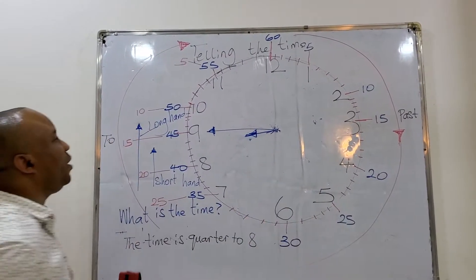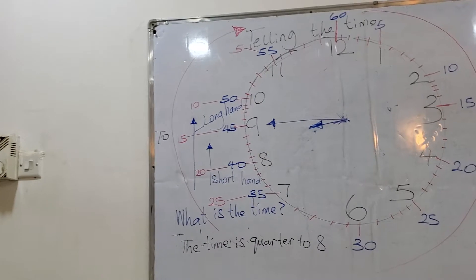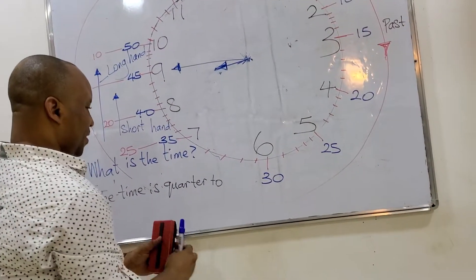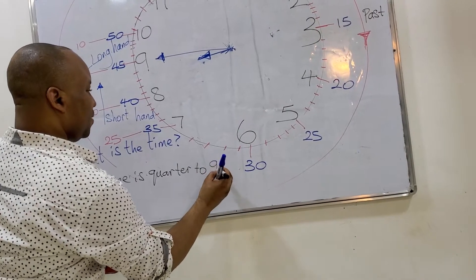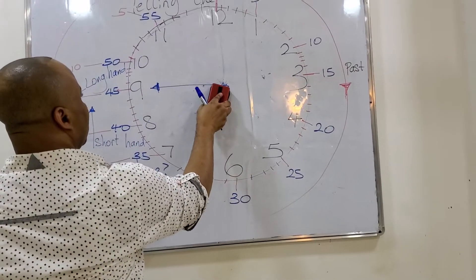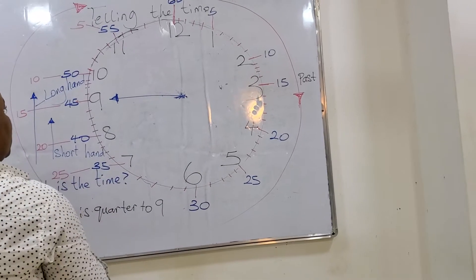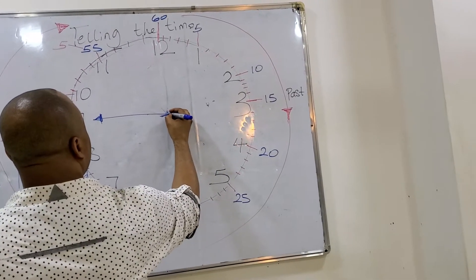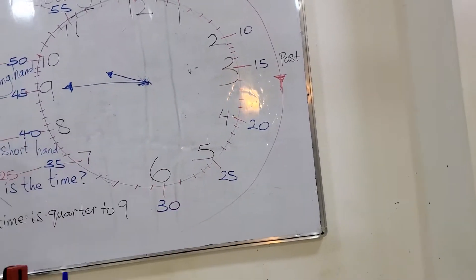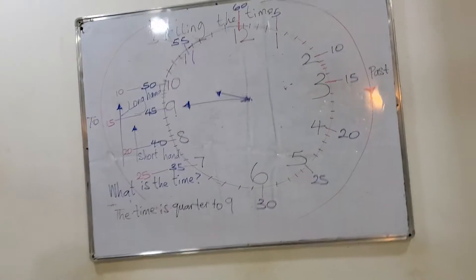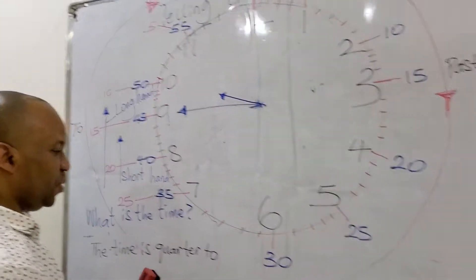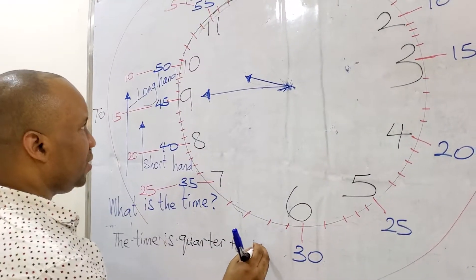What is the time? The time is quarter to nine. What is the time? The time is quarter to ten.